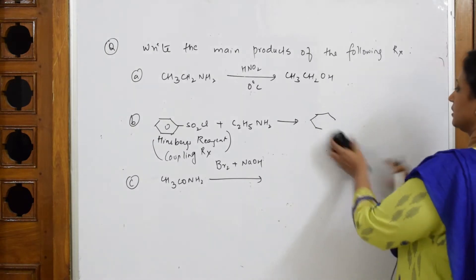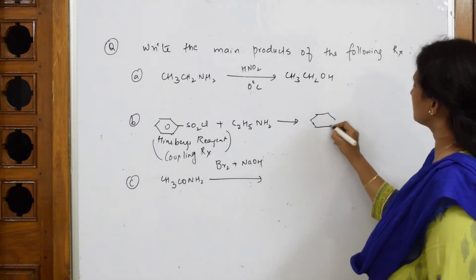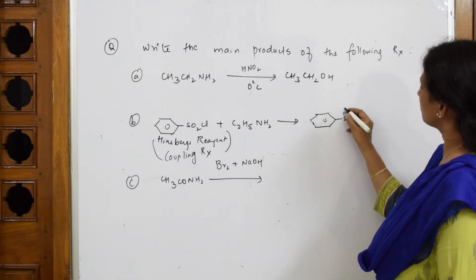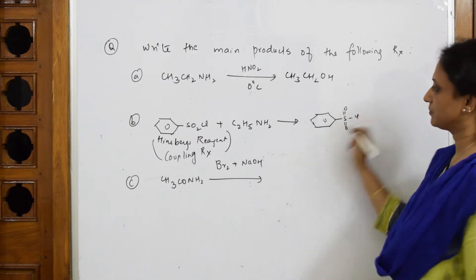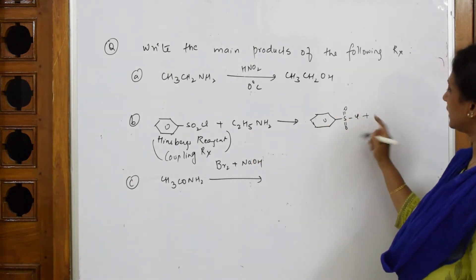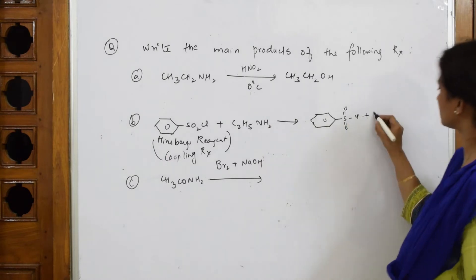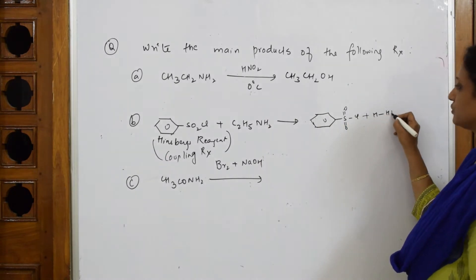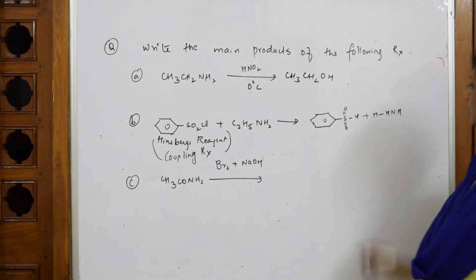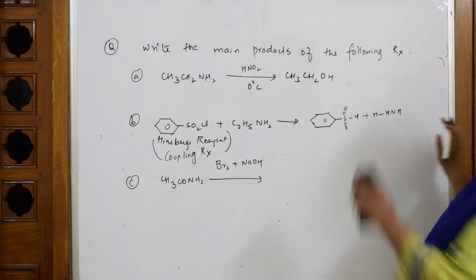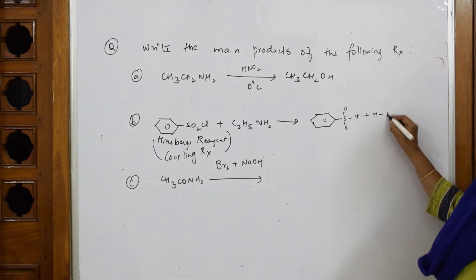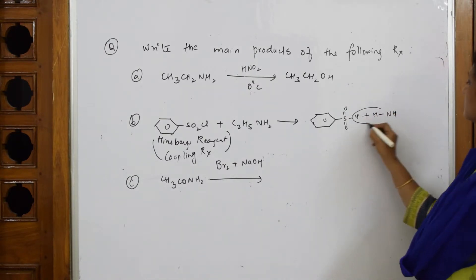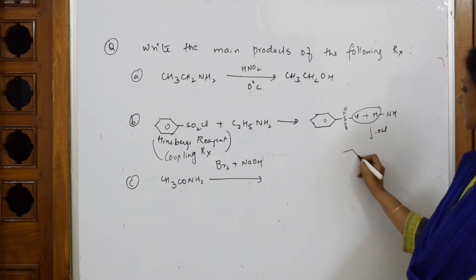With Hinsberg reagent, S double bond O, double bond O, Cl. Now add this, how will you add your Cl and H? Try to make it adjacent so that's easy for you to take out. Another NH, I don't, extra yes, NH. Remove this HCl, remove this minus HCl. What do I get? I'm going to get...